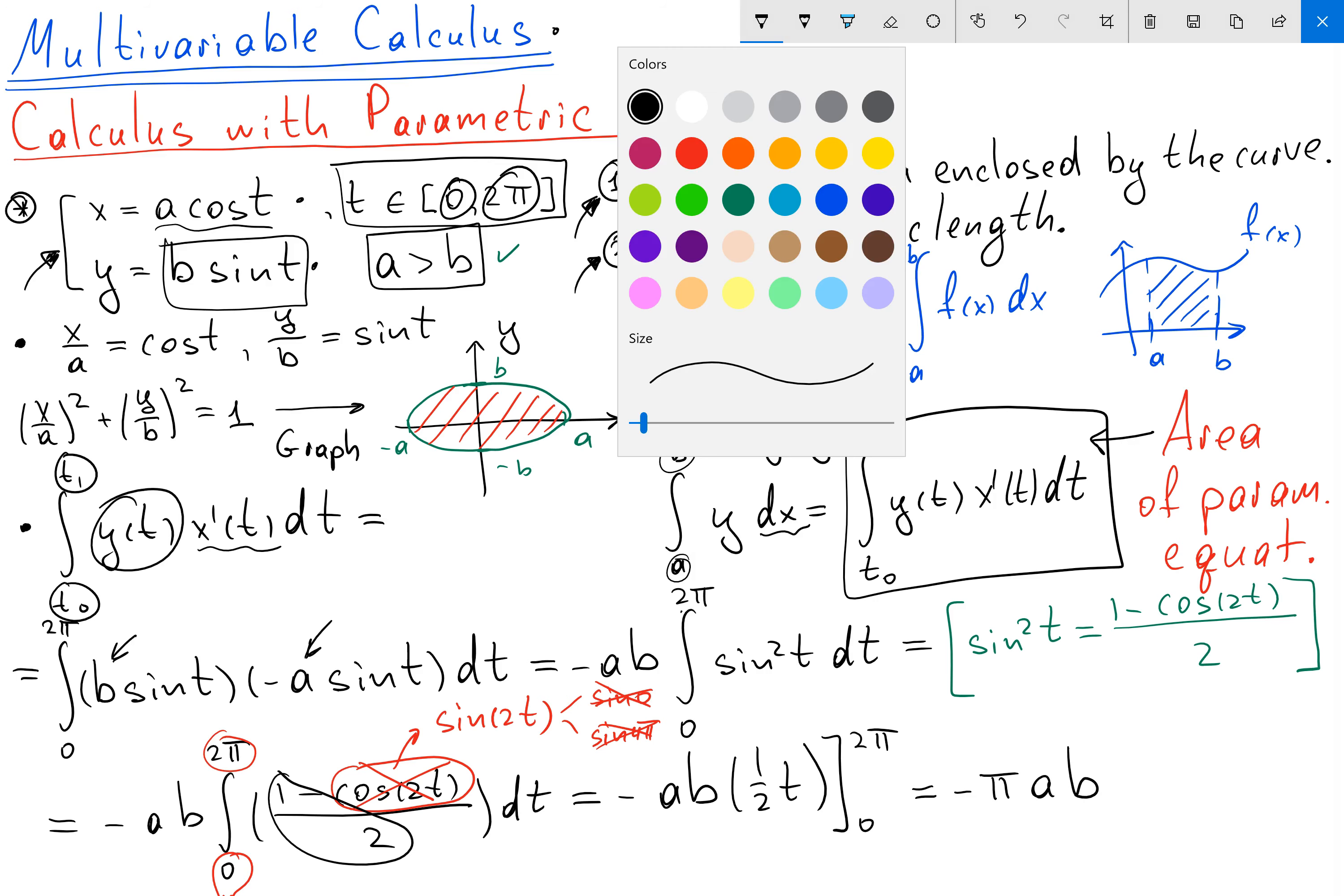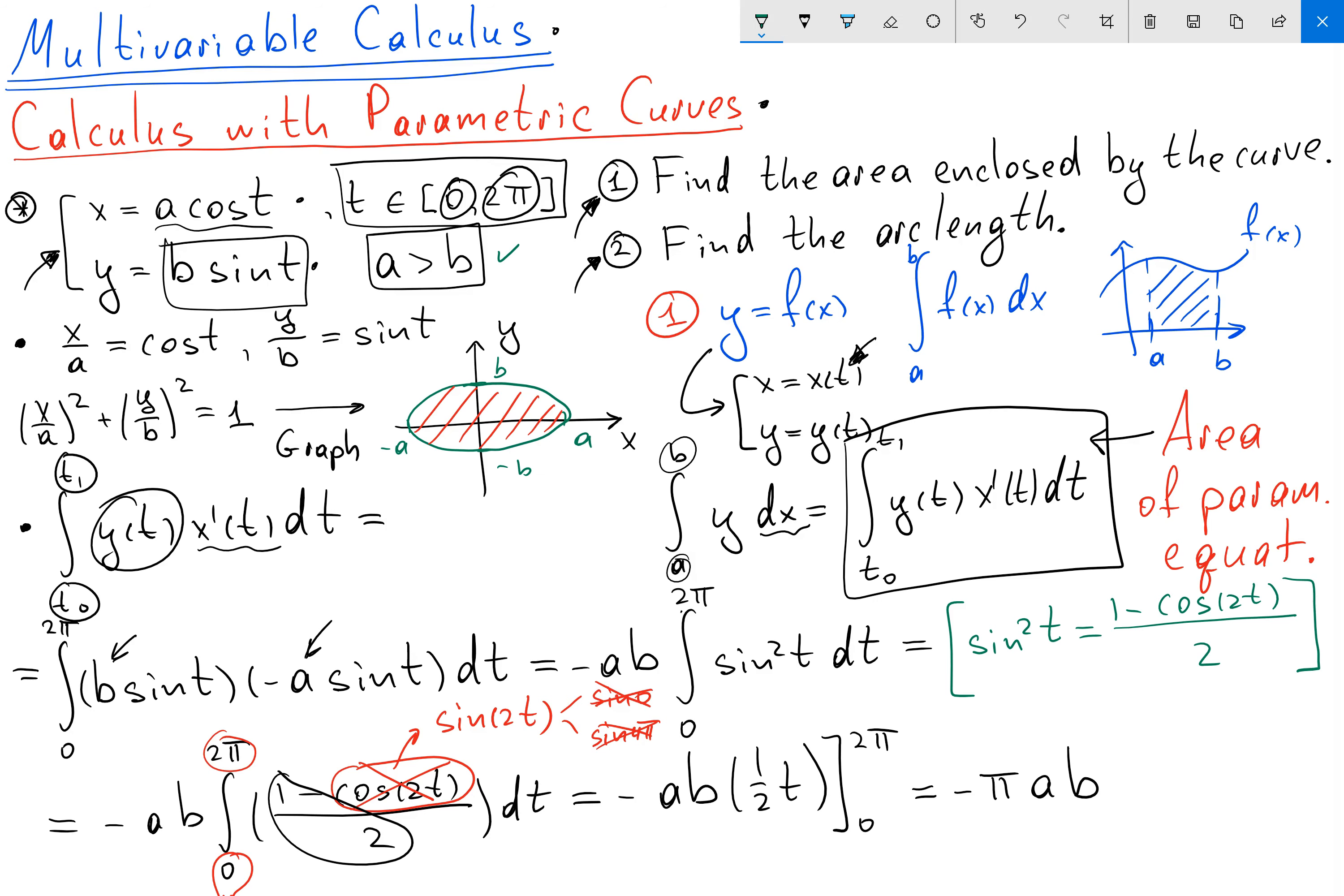And you wonder why do we have negative sign? And negative sign basically depends what parameterization did we choose. If I choose another parameterization, I will get positive sign. But in this case, we can just put absolute value. So my area is going to be just π ab. So this is the area of an ellipse.